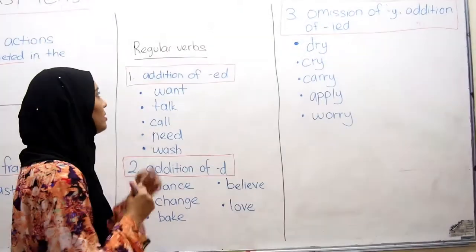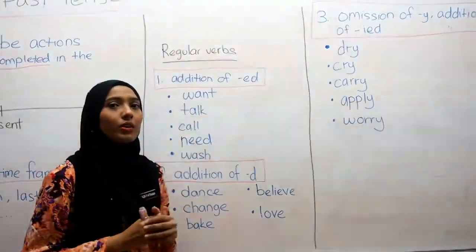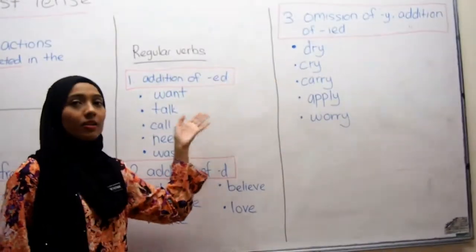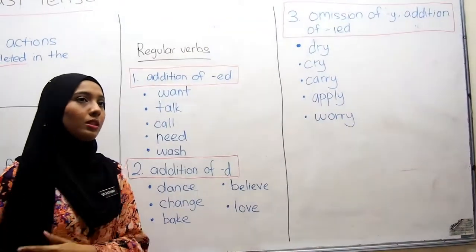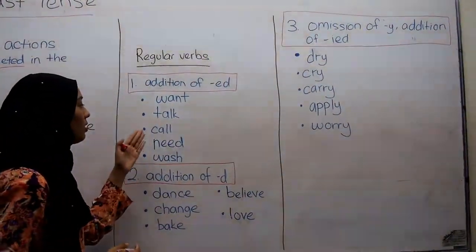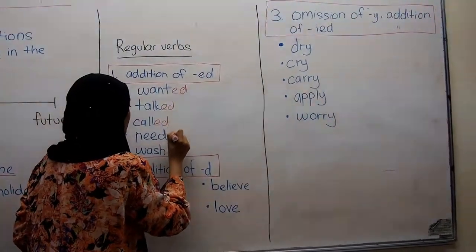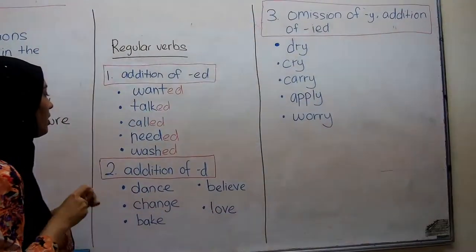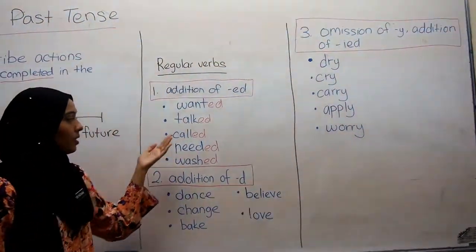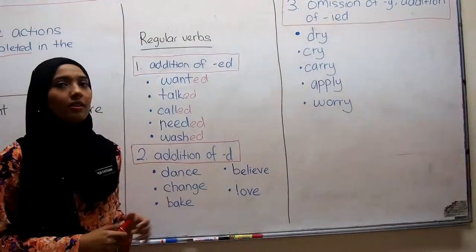Let's start with regular verbs. There are three rules for changing regular verbs into simple past tense. The first rule is the addition of -ed. Most regular verbs take this form — you add the suffix -ed at the end. For example: want becomes wanted, talk becomes talked, call becomes called, need becomes needed, and watch becomes watched.